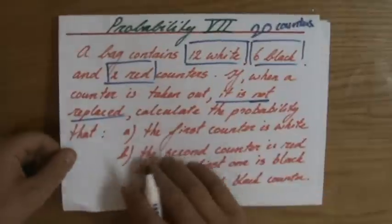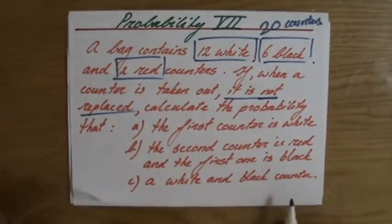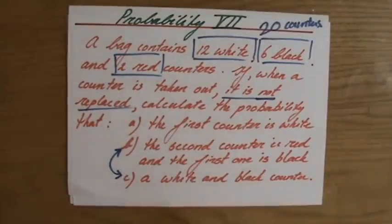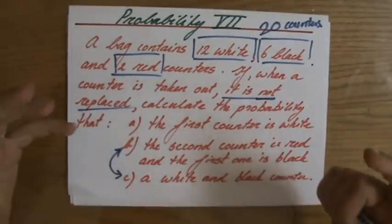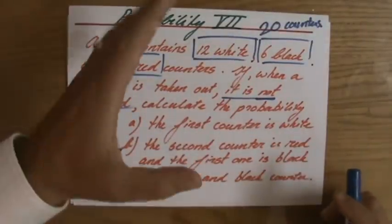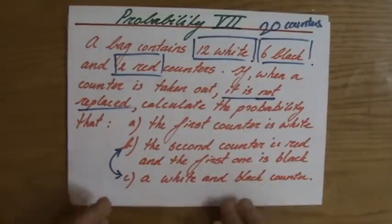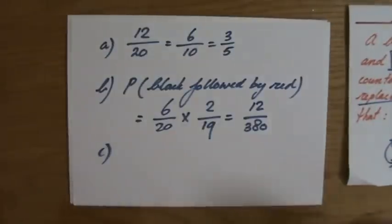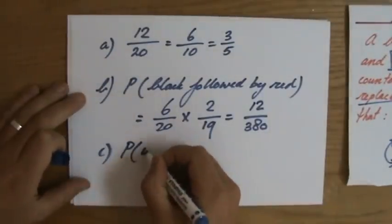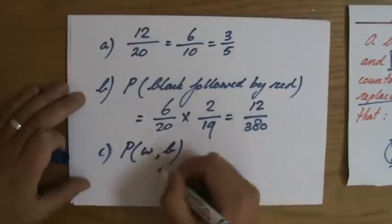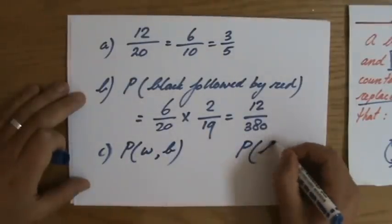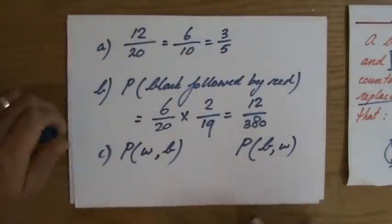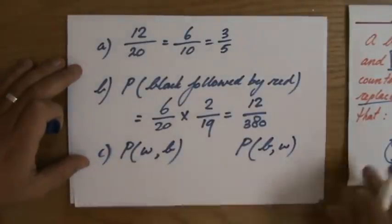Question C. What is the probability that you get a white and a black counter? Now, please distinguish between question C and question B. Question B, the order was important. They specifically say black and then red. And for question C, they say white and a black one. So that could be a white and then a black one. But that is also fine if you have a black and then a white one. I hope you agree with me. Well, let's do this one first.